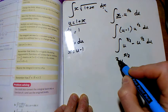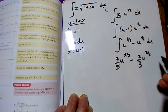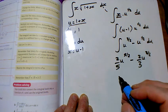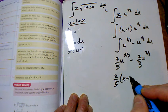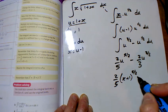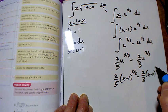So I've got 2 fifths of x plus 1 to the 5 over 2 minus 2 thirds of x plus 1 to the 3 over 2, and I'll add a plus c there as well.